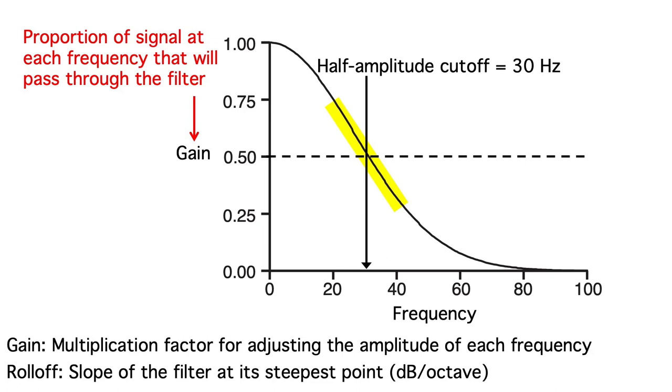You may be wondering why the frequency response function drops off so slowly. As we'll discuss in a minute, a gradual roll-off like this is useful because it avoids time domain distortions that can happen with a sharp roll-off. Now let's see exactly how the frequency response function can be combined with the Fourier transform to actually implement filtering.